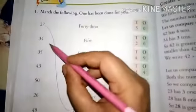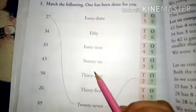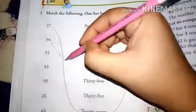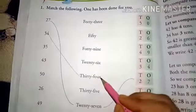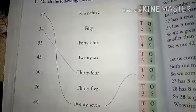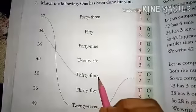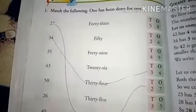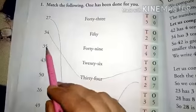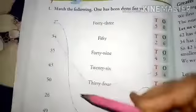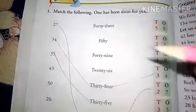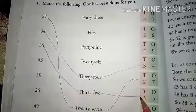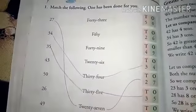अब आता है हमारा 34. देखें, 34 हमारा कहाँ है? यह रहा. Come to 34. 34 और कहाँ लिखा है? 34 — here. 35, 35 — here it is 35, and here also it is 35. Rest, you will do it by yourself.